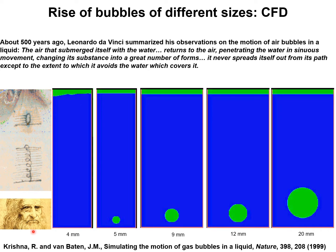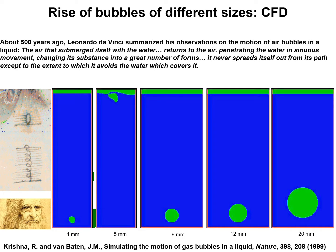500 years after the observations of Leonardo da Vinci, we performed computational fluid dynamics simulations to determine how a single bubble rises in water. Looking at a four millimeter bubble, we see a clear indication of the sinuous motion referred to by Leonardo da Vinci.